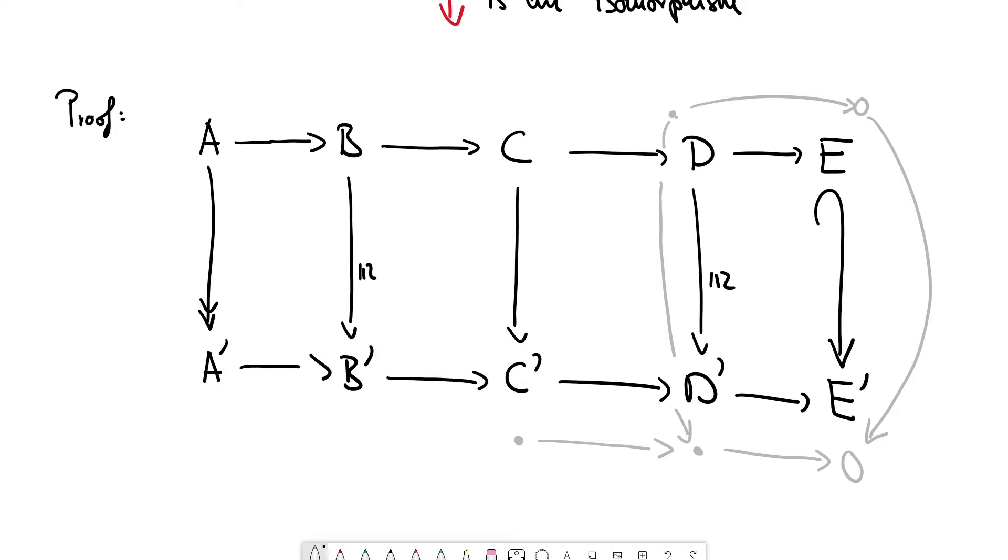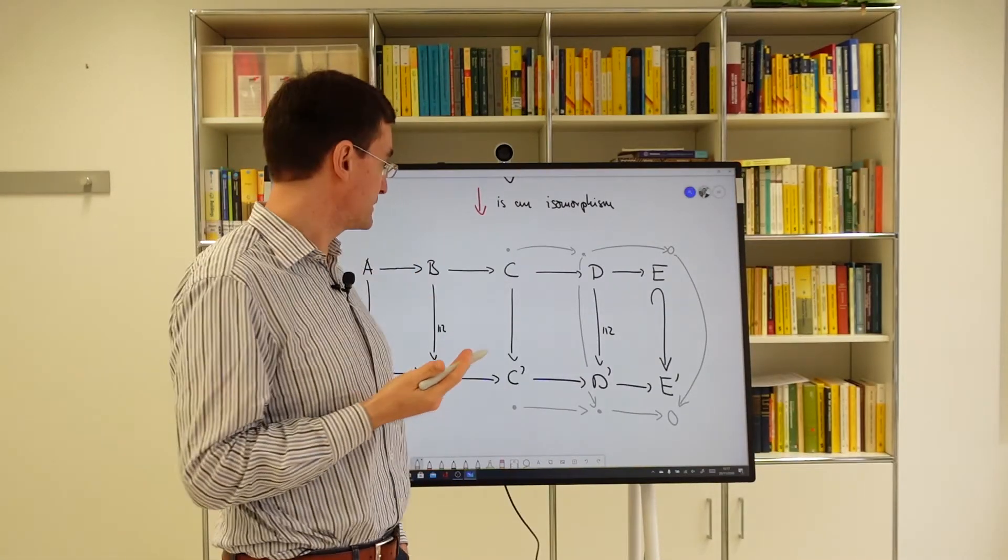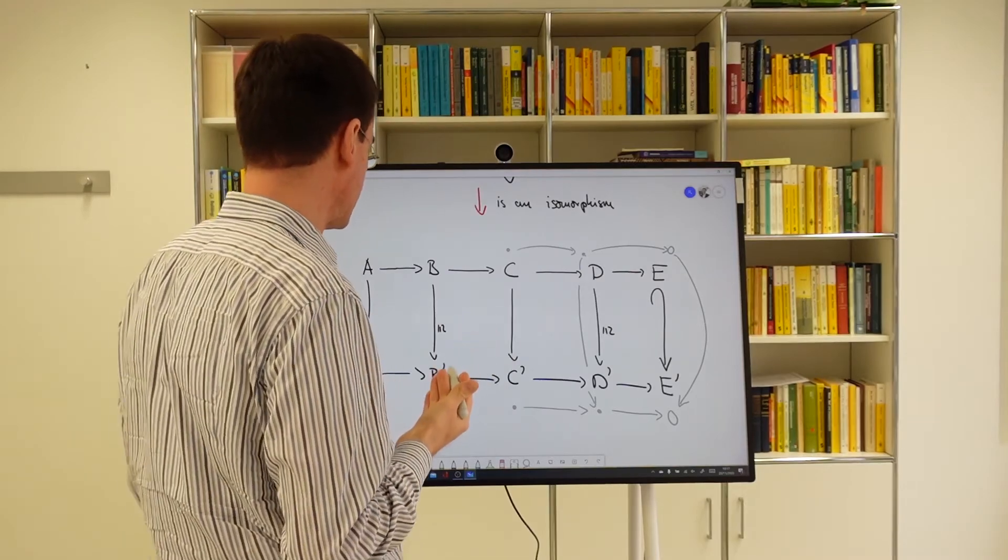Now, we use the exactness at D. This element is moved to zero, meaning it comes from C. That element in C is, in general, not unique. I mean, we have to pick a pre-image, but there is one by exactness.